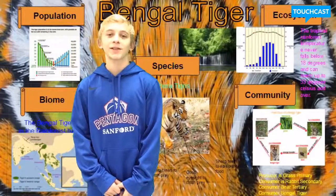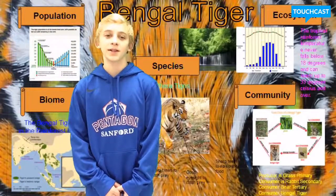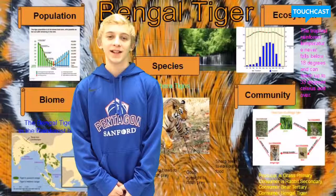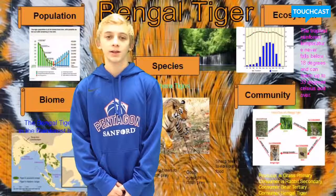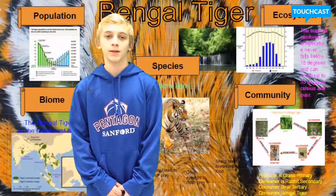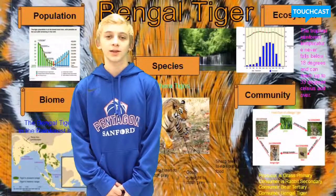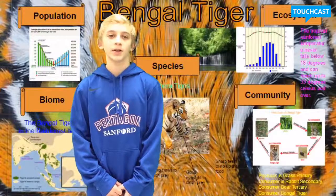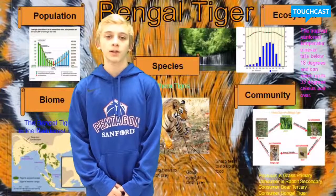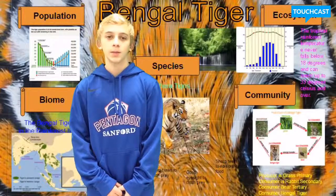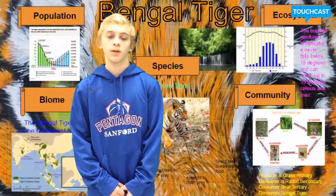Bengal tigers are fierce predators and eat many grazing primary consumers, such as chital, Indian bison, and sambhar — a large deer species native to India. However, as a tertiary consumer, they also eat secondary consumers like the wild boar. The wild boar, in turn, eats herbivores like small lizards, rodents, fish, and insects. Rodents eat grasses, fruit, and seeds present in the forest, which are the producers.